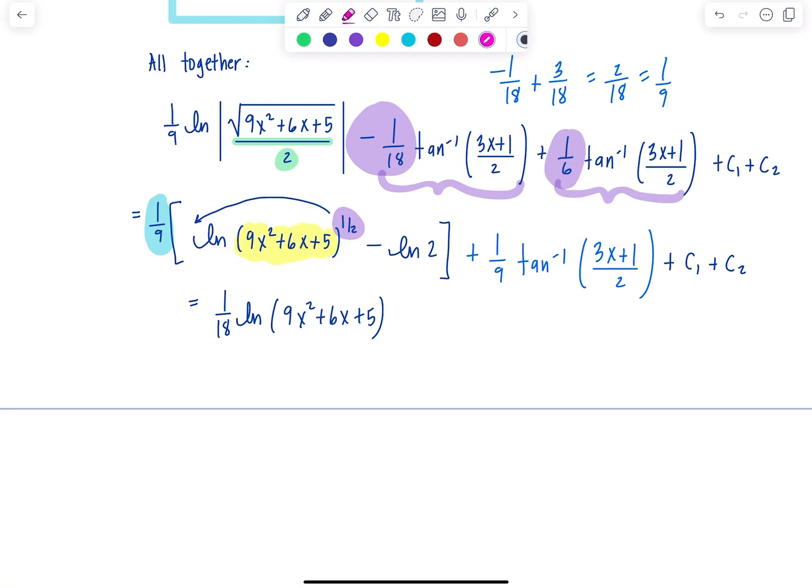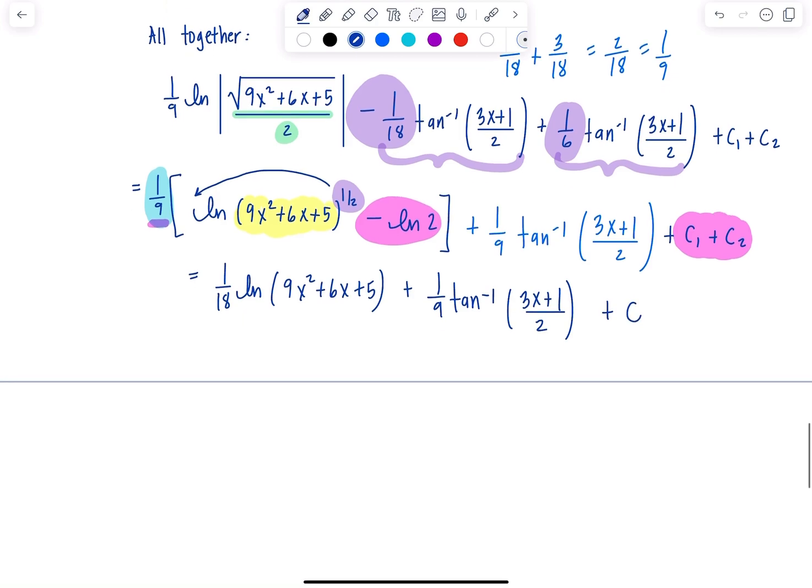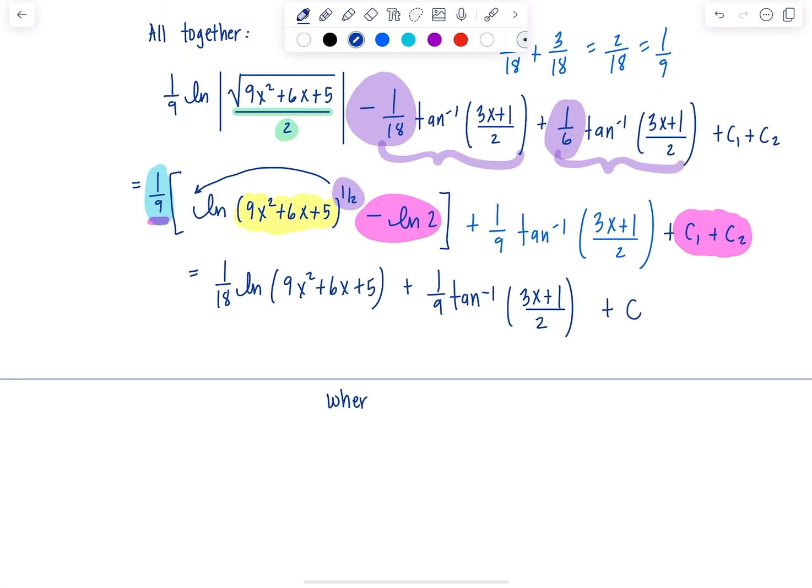This negative ln of 2 times 1 9th, it's just a constant, so I'm going to absorb it with the other constants. I'm just going to have plus 1 9th tan inverse of 3x plus 1 over 2, and then plus C, where C is C1 plus C2 minus 1 9th ln of 2. We absorb this into the new constant C, so clean, so classy.